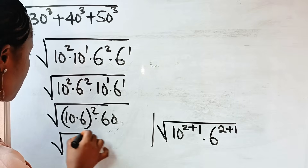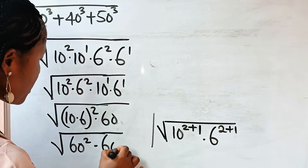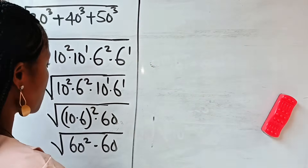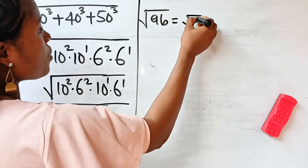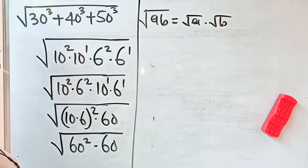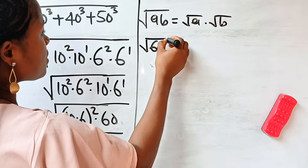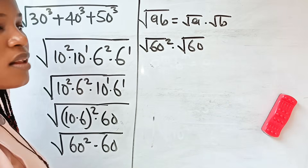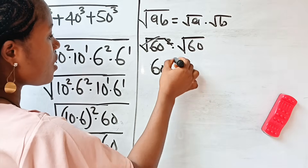So using the rule that a to the power of m multiplied by b to the power of m equals ab raised to the power of m, we can write this as (10 multiplied by 6) raised to the power of 2, which is 60 squared. So we can cancel the square root of 60 squared, and multiply by square root of 60. So we now have 60 root 60. But root 60 is not in its simplest form, so let's simplify it further.